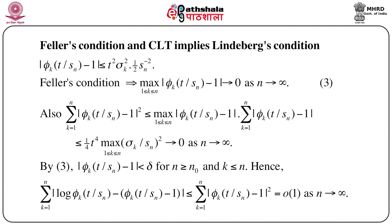We know that if we consider the characteristic function φ_k, then |φ_k(t/s_n) - 1| ≤ (t²/2) · σ_k²/s_n². Feller's condition implies that max_{1≤k≤n} |φ_k(t/s_n) - 1| → 0, because max_k σ_k²/s_n² → 0 as n → ∞.